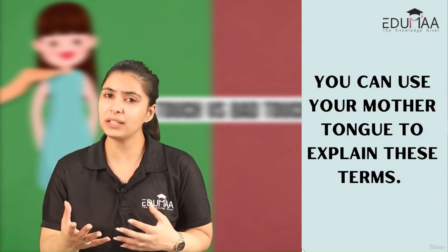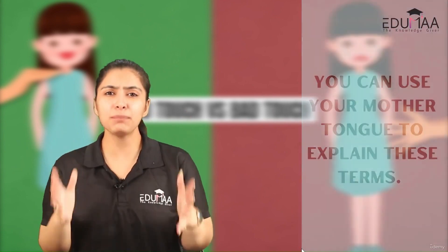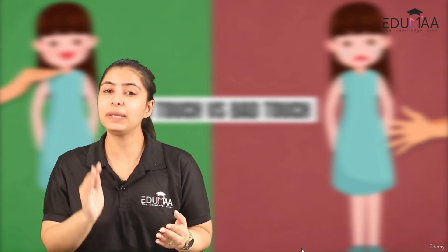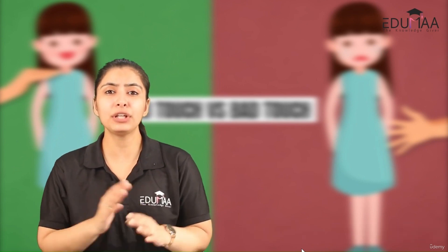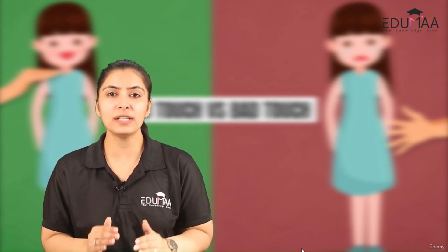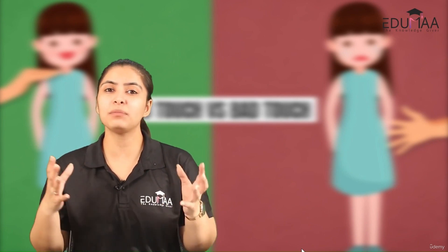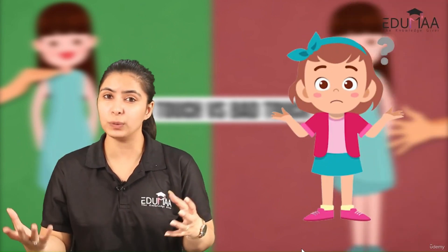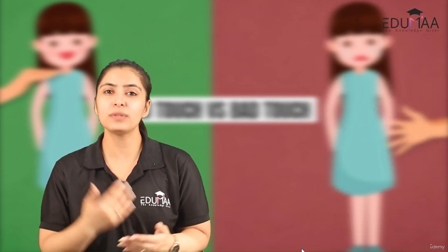You can also use your mother tongue while explaining good touch and bad touch to them. It's important for your child to grasp this and remember it for their lifetime. Never use complicated languages — just use simple words while teaching them this, because if you use complicated language, they will get confused and not understand what you are trying to tell them.